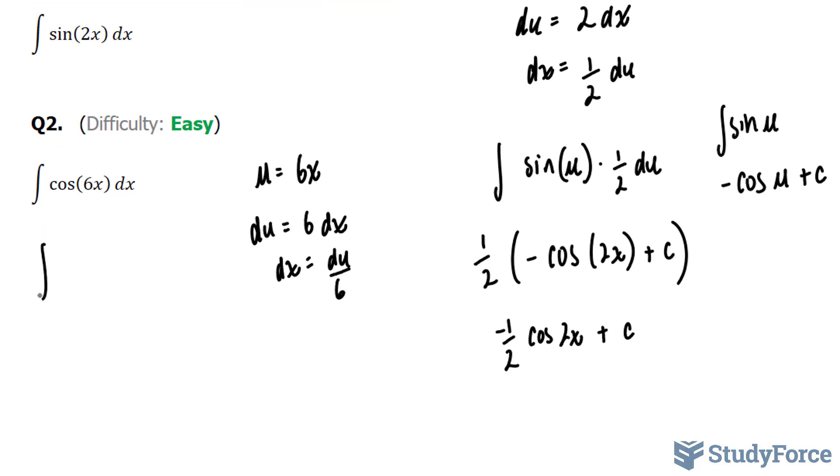Replacing this into my integral, I end up with cosine u. And this dx is now replaced with du over 6.